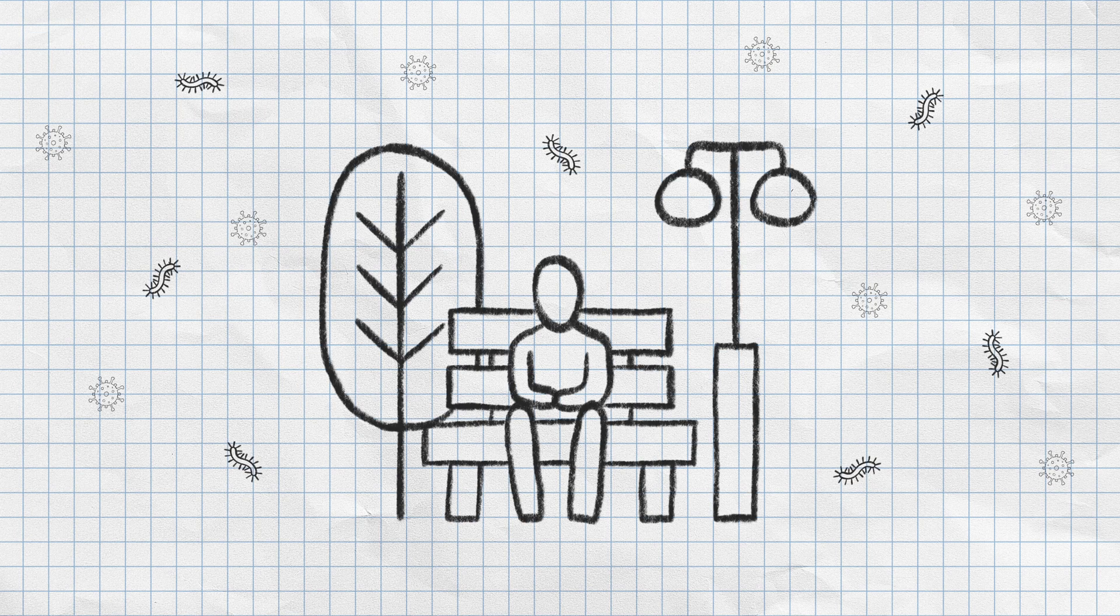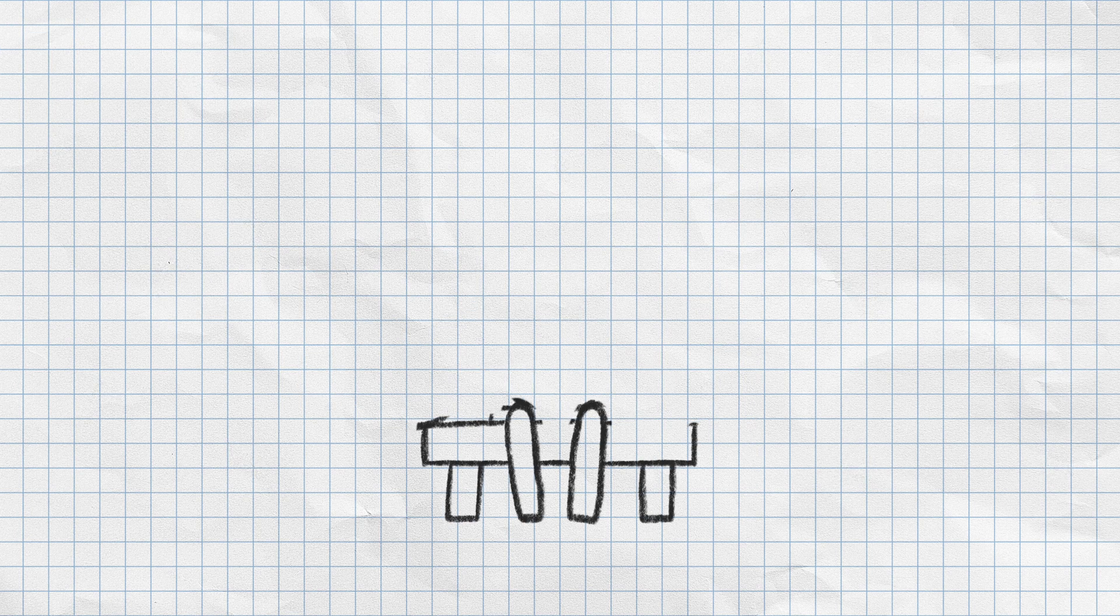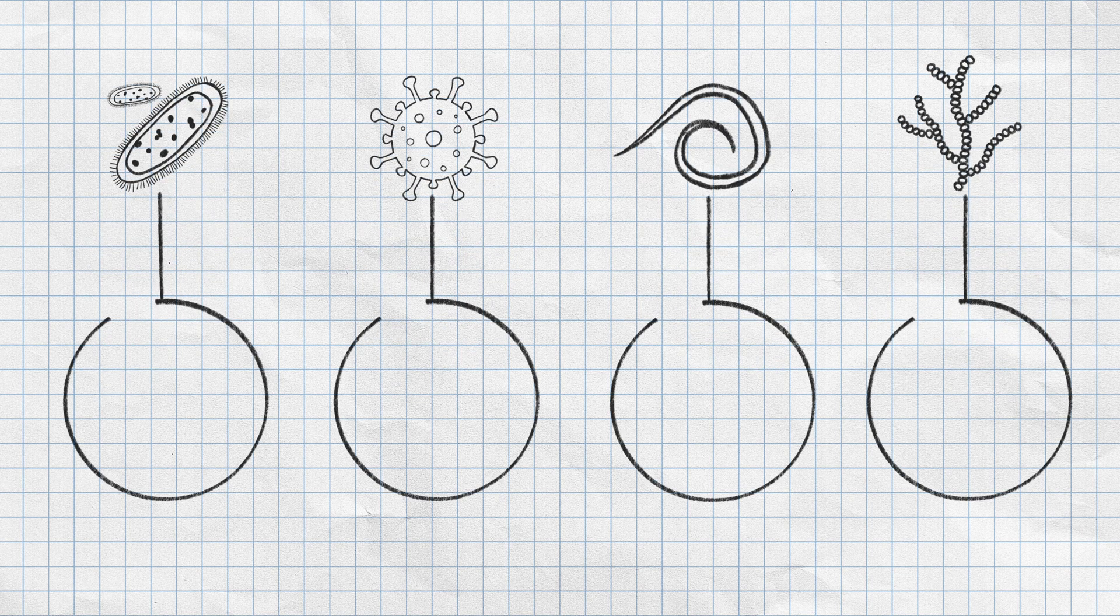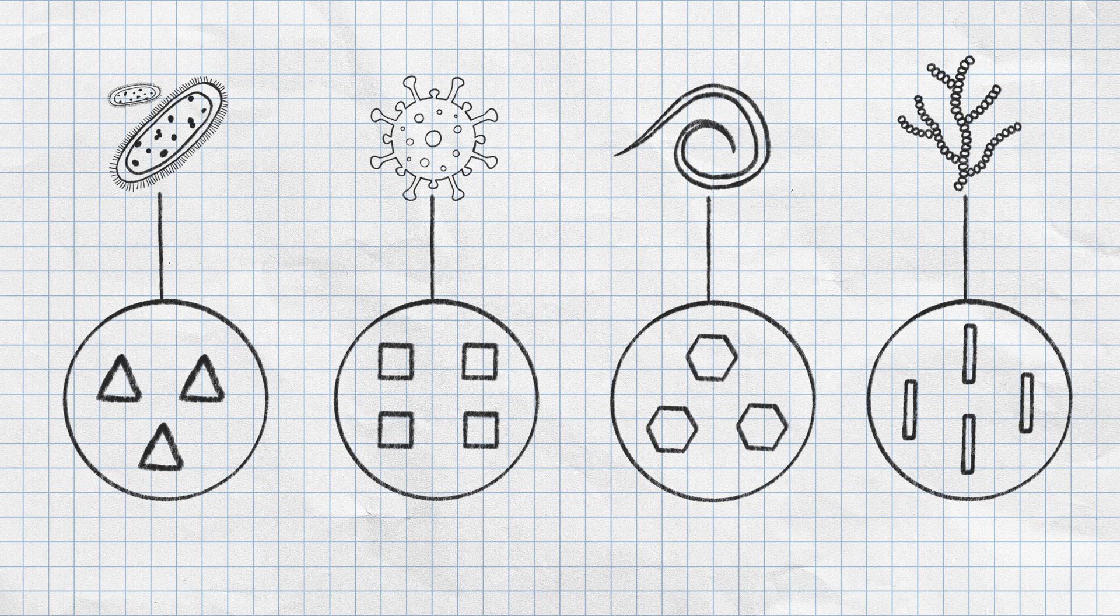We're constantly surrounded by disease-causing organisms. Whether bacterium, virus, parasite, or fungus, germs or pathogens are made of several subparts which are unique to that organism and the specific disease it causes.